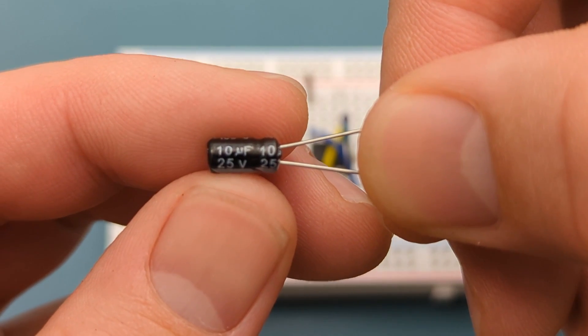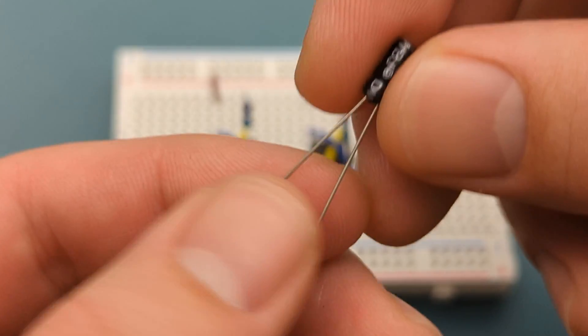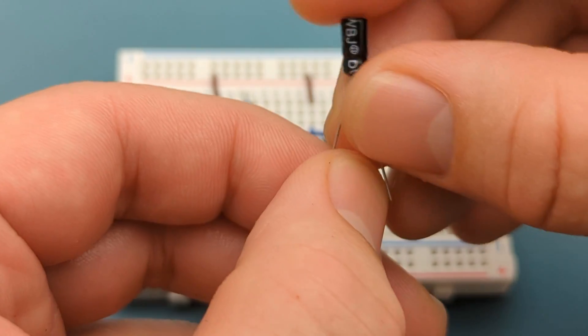Insert a 10 microfarad capacitor into pin 3 of the second 555 timer and a few rows below it. The anode is in pin 3.